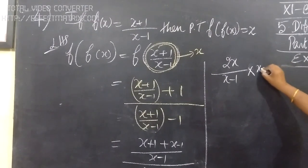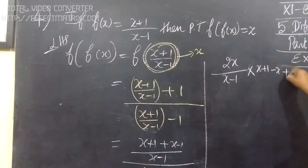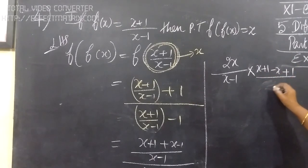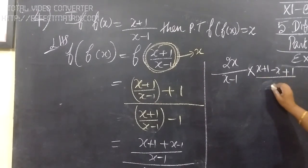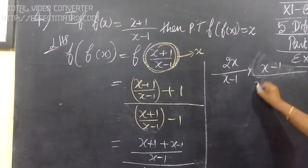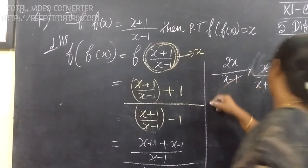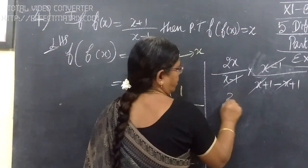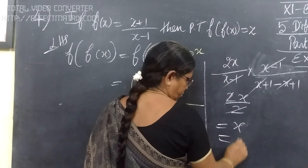x plus 1, this is minus 1. Minus x minus into minus plus 1. That is the inner calculation. So x plus 1 minus x plus 1 in the numerator, and x plus x minus x cancel. So we get 2x by 2, and this is equal to x. Therefore f of f of x equals x.